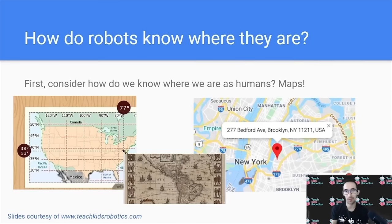So how do robots know where they are? First, let's consider how humans know where they are, which is using maps. Consider a map of the United States. We can often divide where we are on a map, using coordinates known as latitude and longitude. With either of these two numbers, we'll know exactly where we are in the United States.